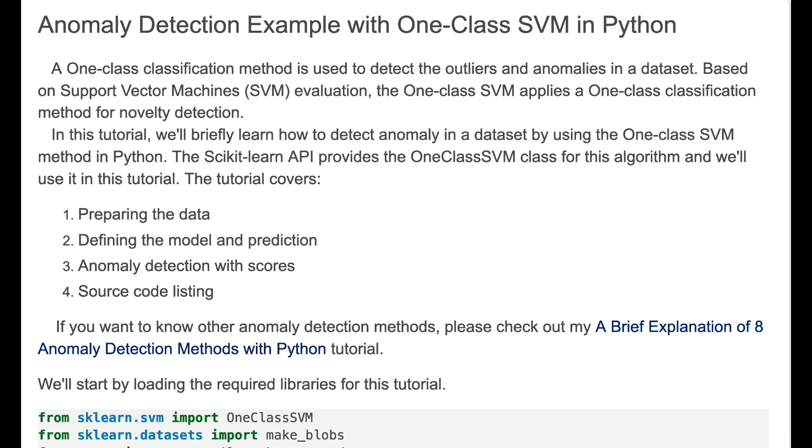A One-Class classification method is used to detect the outliers and anomalies in a dataset. Based on support vector machines evaluation, One-Class SVM applies classification method for novelty detection.